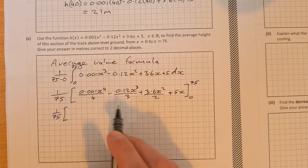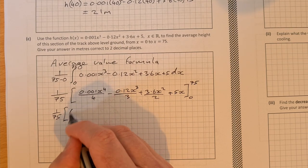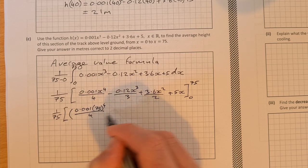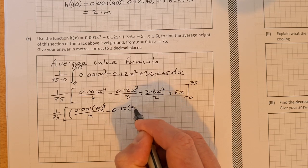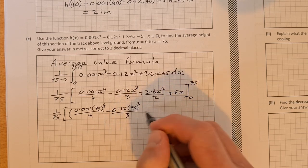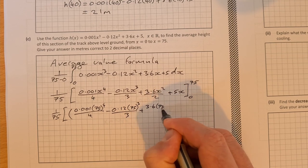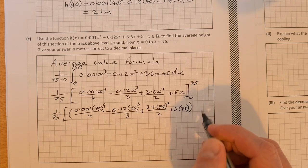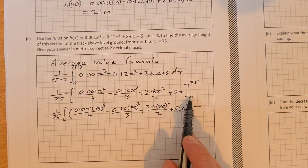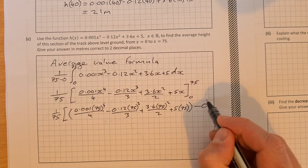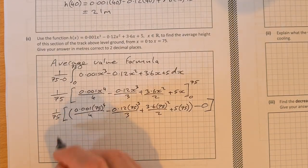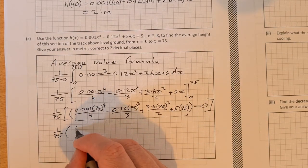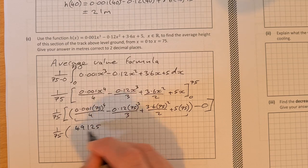So that would be equal to 1 over 75 times, now first of all we sub in 75, so that would be 0.001 times 75 to the power of 4 over 4 minus 0.12 times 75 to the power of 3 over 3 plus 3.6 times 75 squared over 2 plus 5 times 75. And then that'll be minus all of this when we sub in 0, but you can see that all of them will just be 0, so it's just minus 0. We don't need to go and do it again. So that's equal to 1 over 75 times all of this here. You can throw it into your calculator, see what you get.